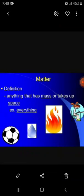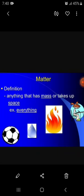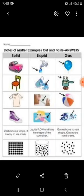Almost everything around us is made up of matter. Now there are three states of matter: solid, liquid, and gas. Solids have a definite shape and definite volume — for example, a wall, cloth,